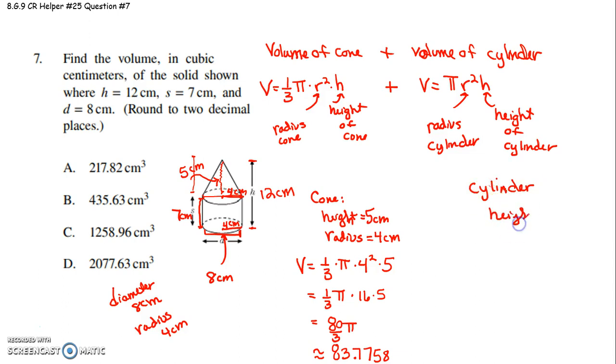The height of our cylinder, they give us the height. When they tell us what S is, they give us this height. The height of our cylinder is 7 centimeters. And then, let's look at the radius of our cylinder. Well, the radius of our cylinder actually matches the radius of our cone, because it sits right on top of that. So, the radius of our cylinder is 4 centimeters.